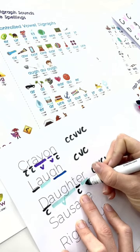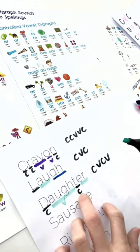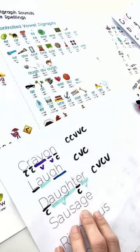The ER, yeah, the ER is an R-controlled vowel, I need more fingers, there we go.